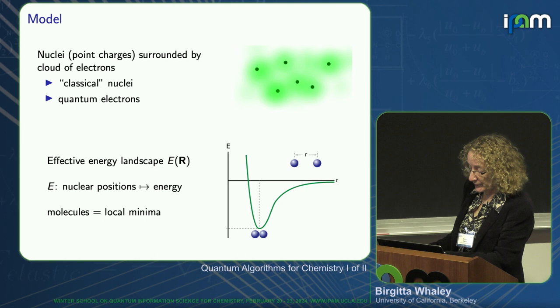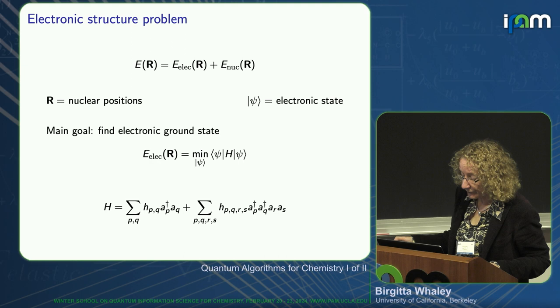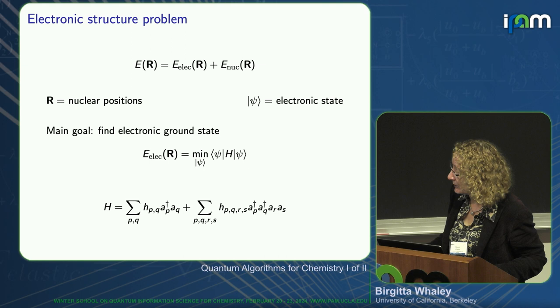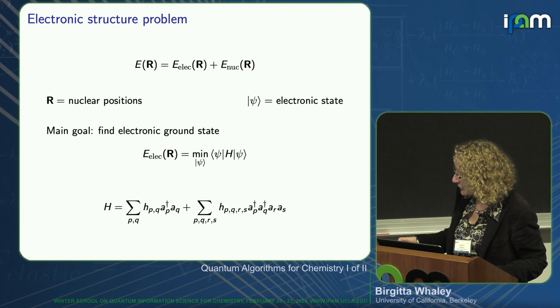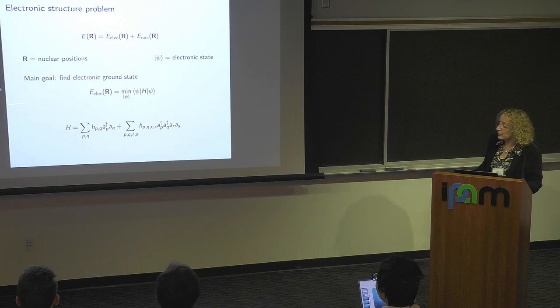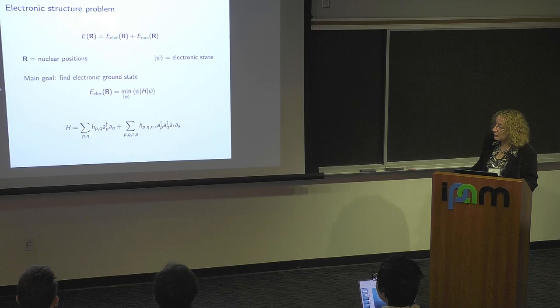Here's a simple statement of the electronic structure problem. We have the sum of the electronic and nuclear energies. In the Born-Oppenheimer approximation they're distinct. We wish to solve for the electronic states psi for given nuclear positions r, meaning we wish to minimize over all possible wave functions the expectation value of the Hamiltonian operator. The Hamiltonian is written in second quantized form as a sum of one-body terms and two-body terms. You've already had lectures from Anna Krylov on classical quantum chemistry — this is all classical at this point.